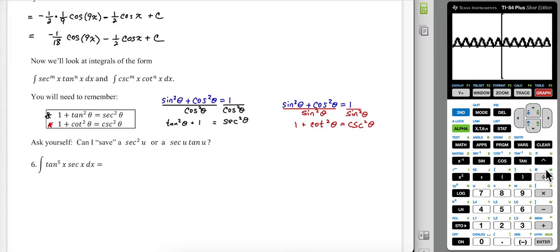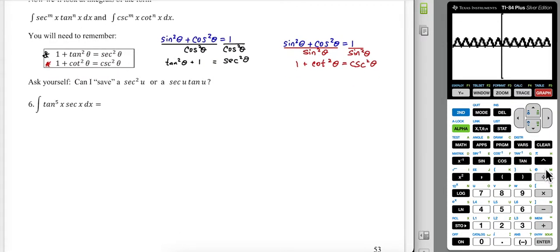As long as you know sine squared plus cosine squared equals one, you can always invent these. So I want to be able to apply these rules. I see here the little notation: ask yourself, can I save a secant squared or a secant tangent? We know the derivative of tangent is secant squared, derivative of secant is secant tangent. So if we could save one of those, then we have a built-in part that we can anti-differentiate.